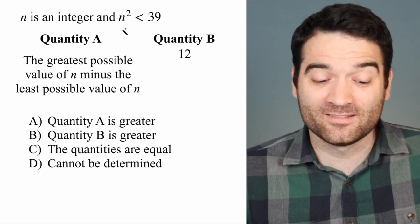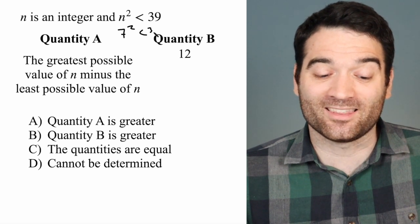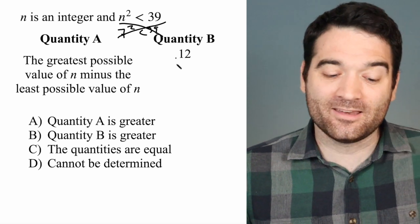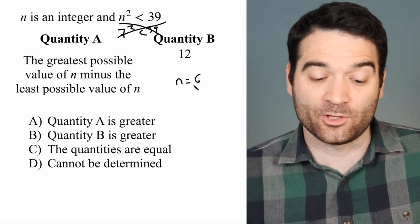But 7² is not less than 39. So at maximum, n can equal 6. That's the greatest possible value of n.